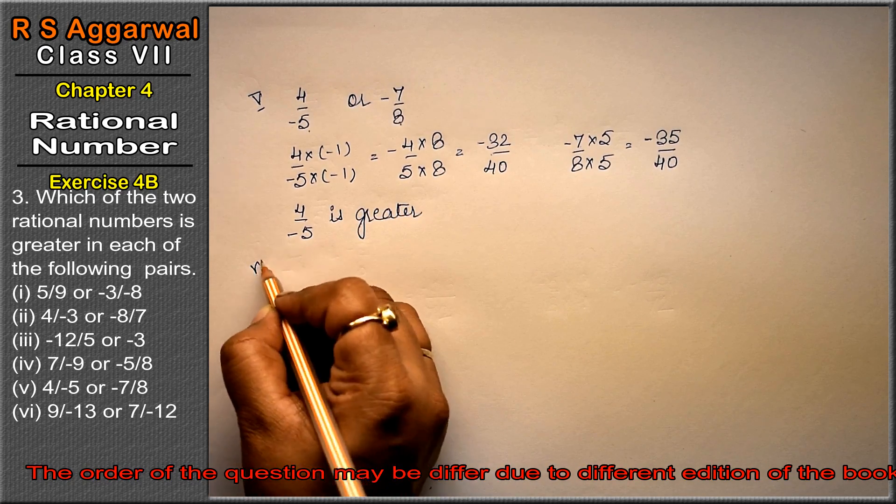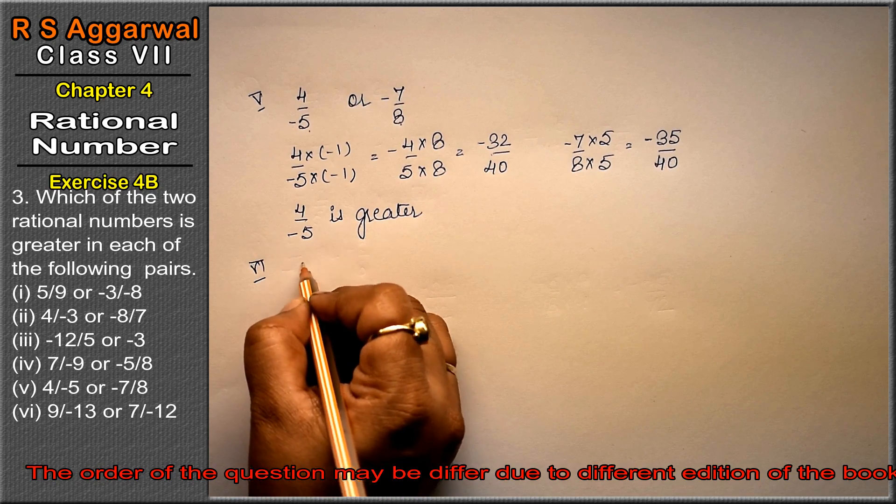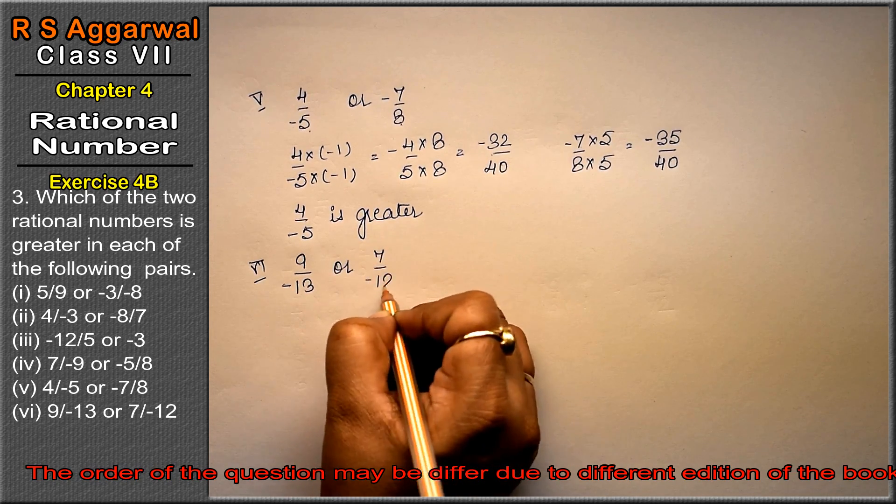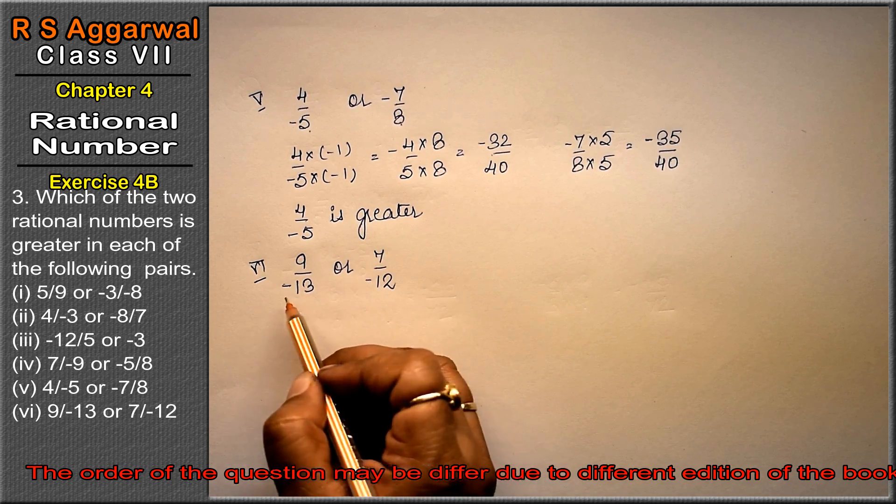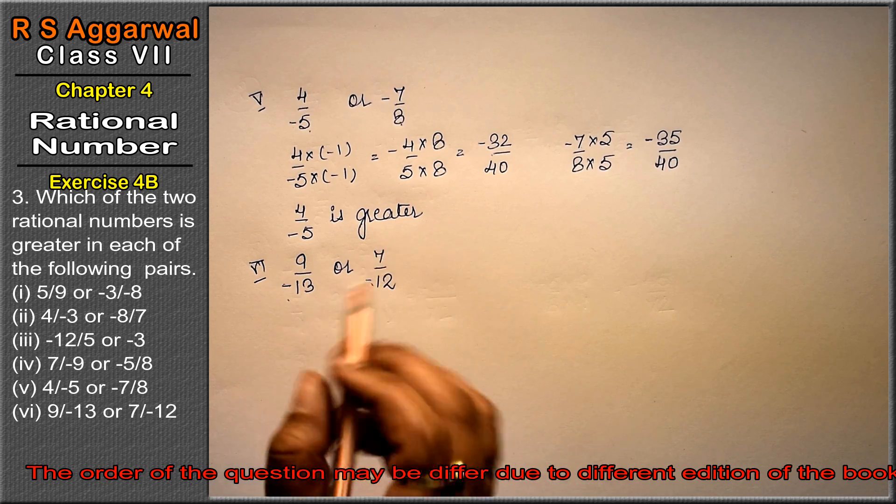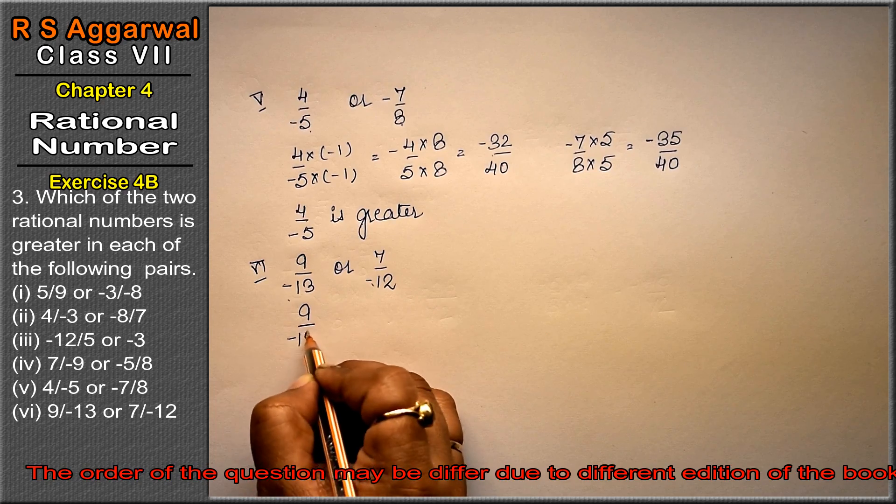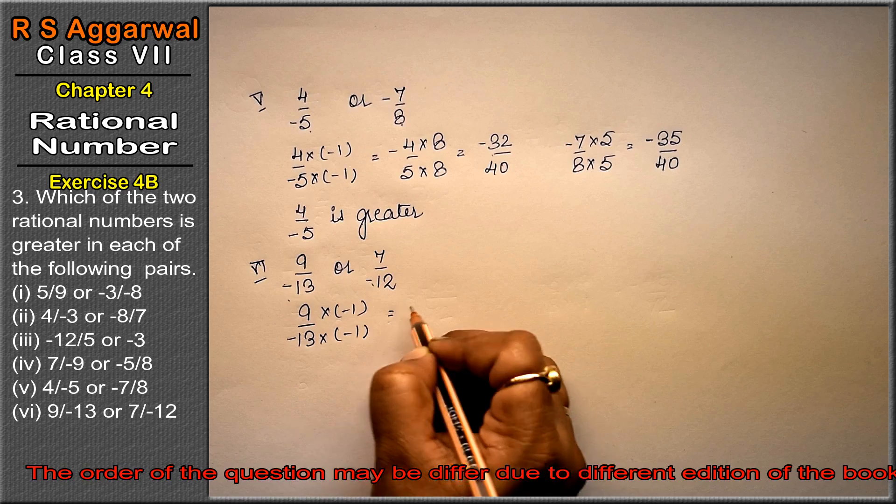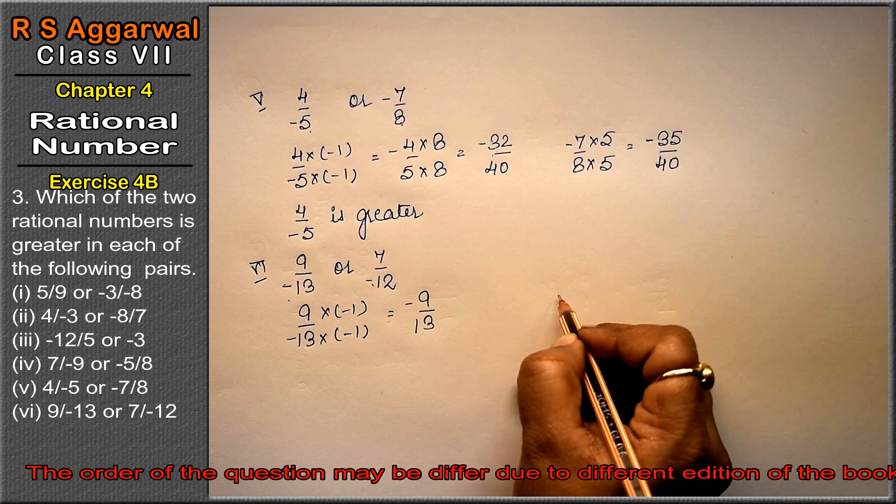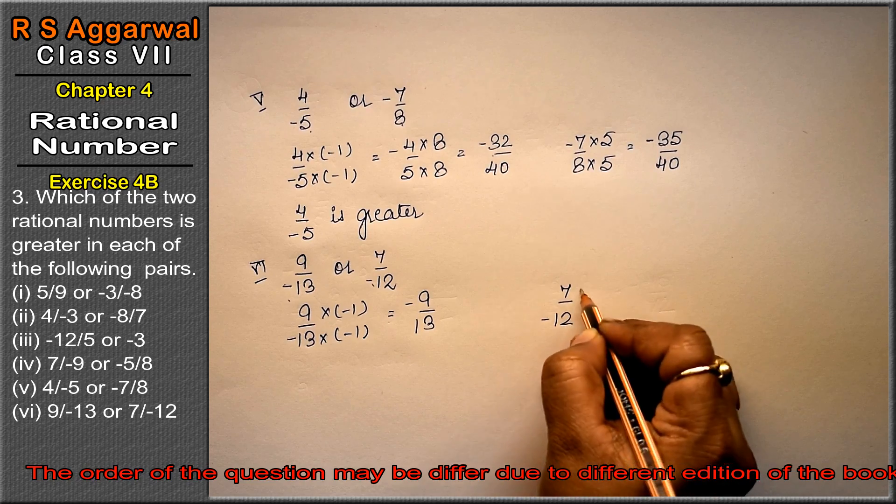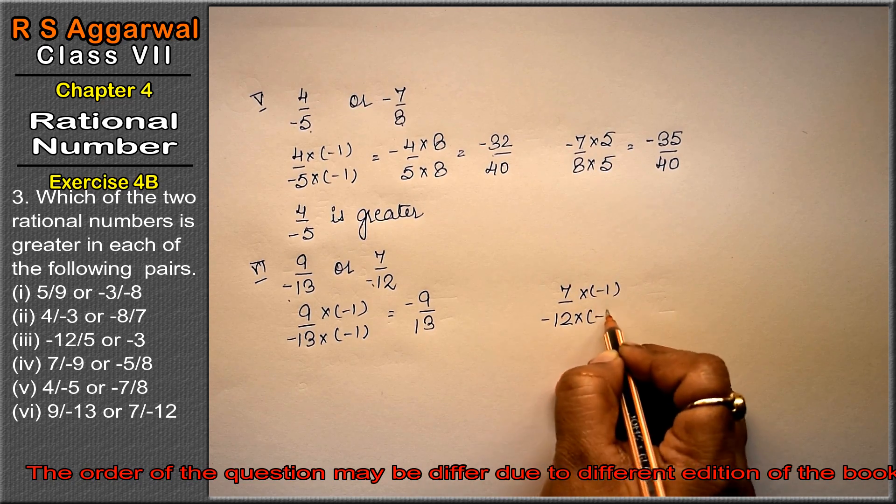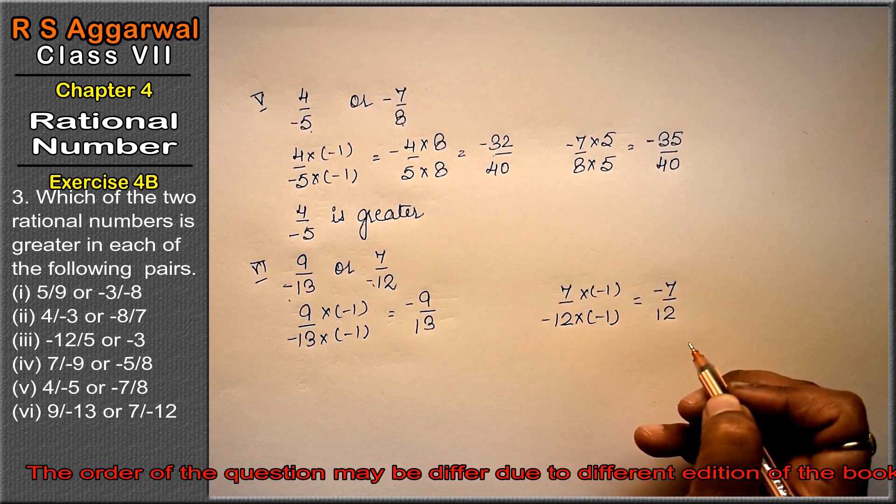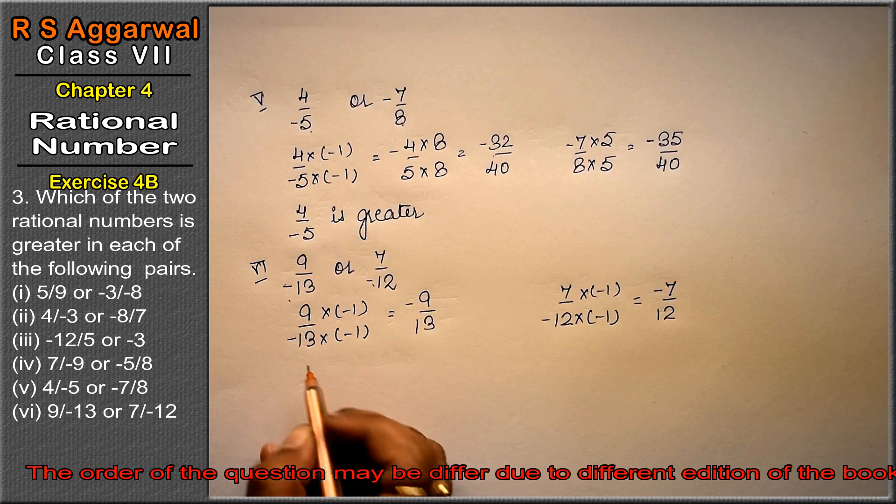Sixth part is 9/-13 or 7/-12. Both have minus in the denominator, so multiply both by -1. 9/-13 becomes -9/13, and 7/-12 becomes -7/12. This step is very important. Please watch all my videos as I teach many concepts in different videos throughout.